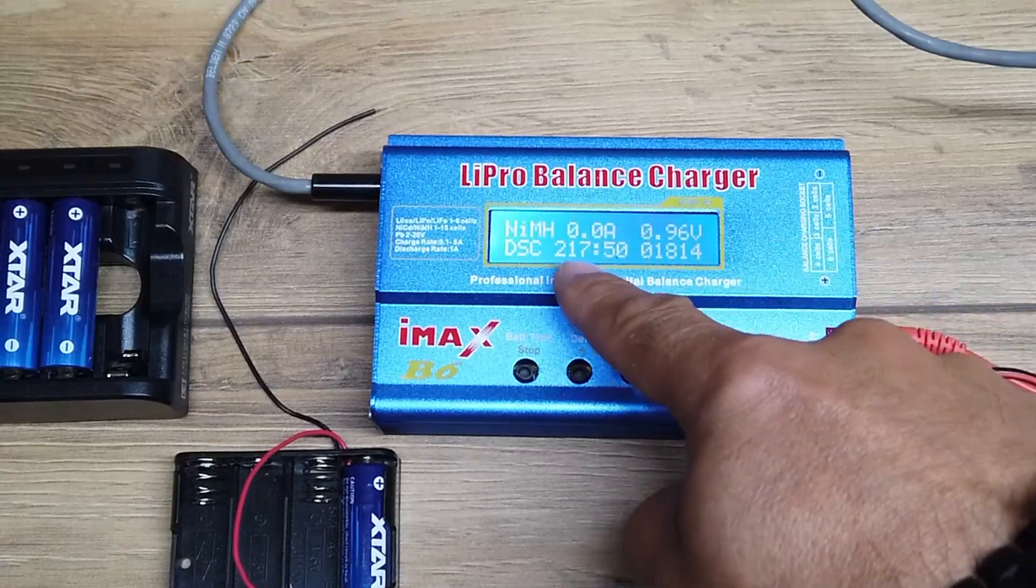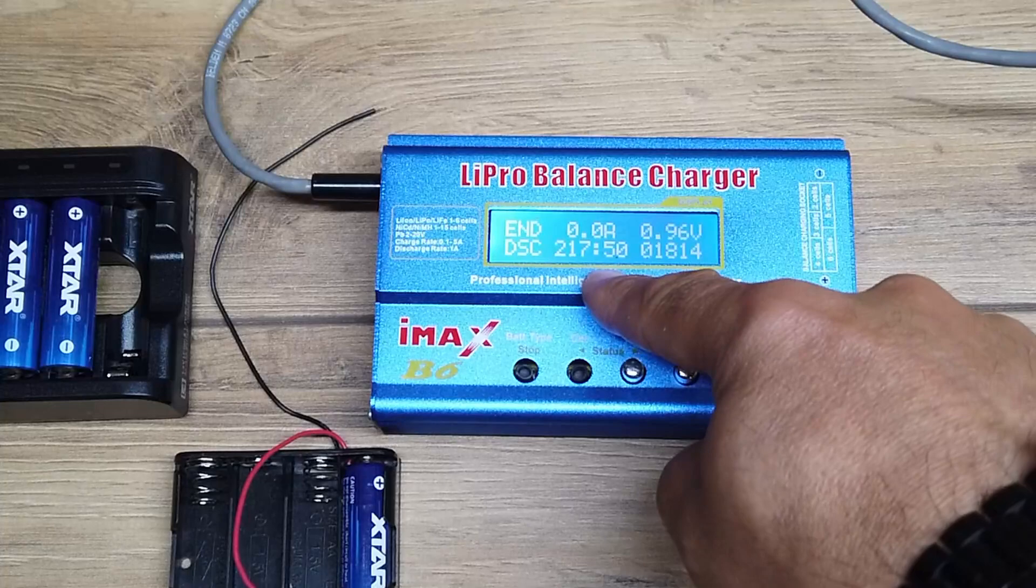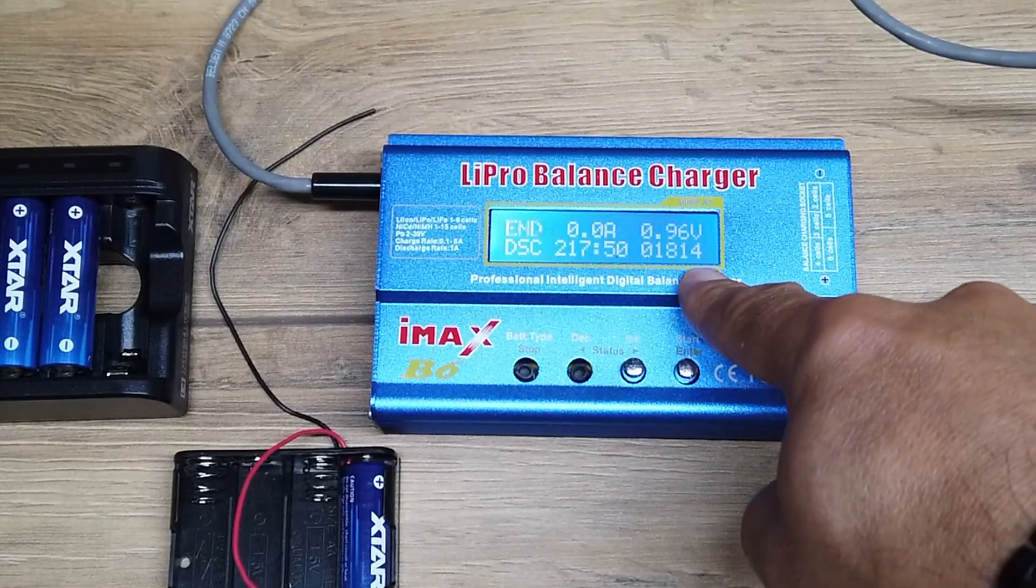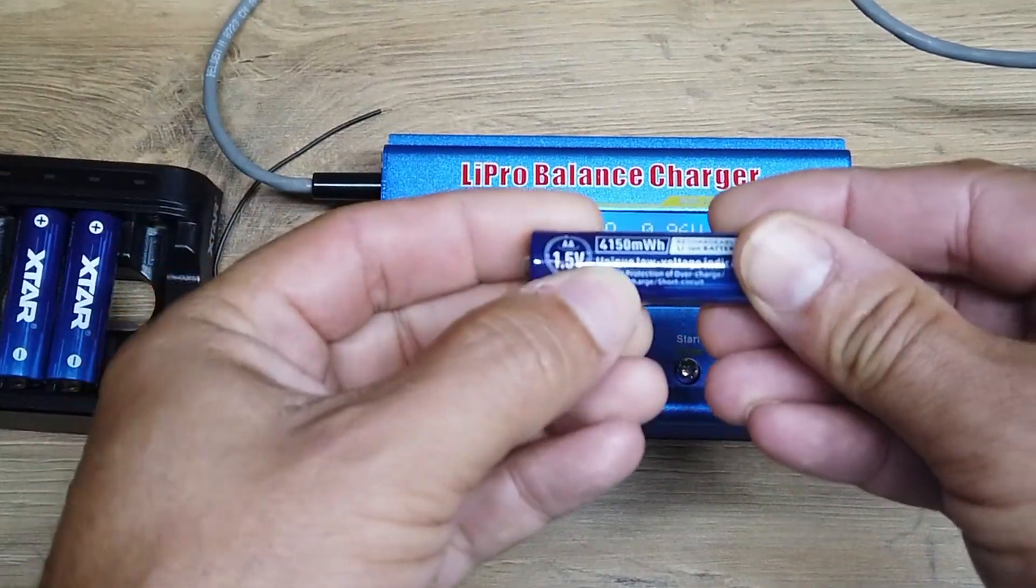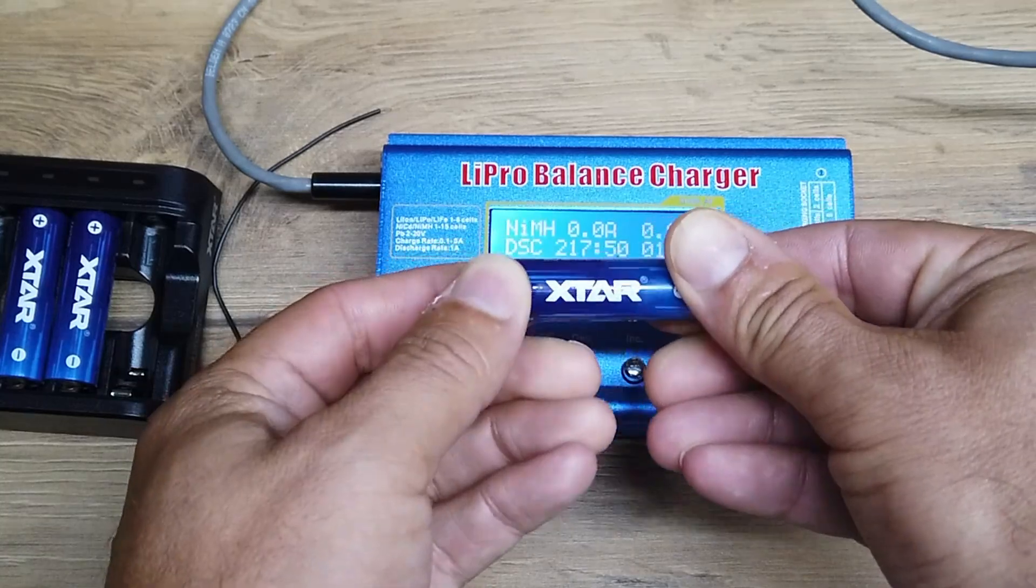It was running at half an amp, if you remember correctly, for 217 minutes. So pretty good going. Let's do the math and figure out what that equates to and whether or not it's anything close to the 4,150 milliwatt hours advertised by X-Star.